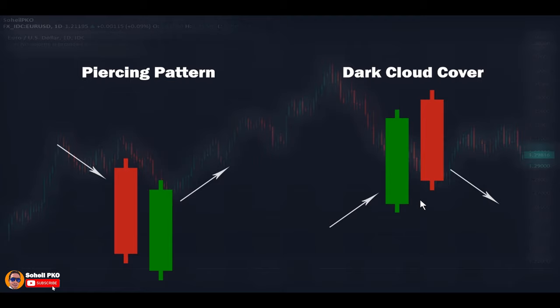If the red candle closes lower than the open of the first candle and totally engulfs the body, it becomes a bearish engulfing pattern, which gives the strongest signal. The difference between bearish engulfing and dark cloud cover is that the second candle in bearish engulfing closes below the first candle's open, making it stronger. By considering equal conditions, bearish engulfing is stronger than dark cloud cover.